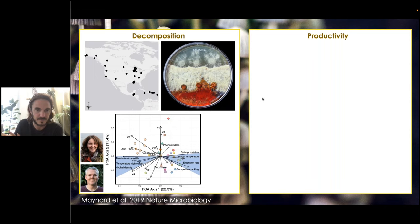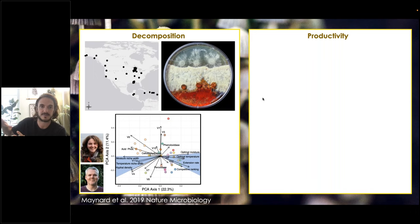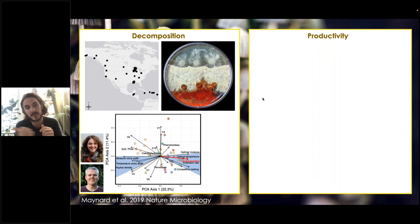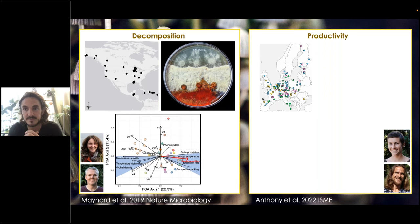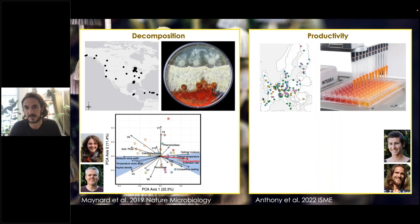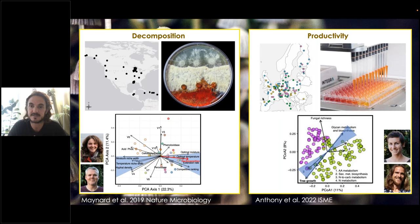By throwing all of those traits into a principal component analysis, we can start to see the trade-offs in trait expression that explain variation in decomposition across these fungi. We see a very clear trade-off between fast-growing fungi on the left and slow-growing fungi on the right. The slow-growing individuals are very good at tolerating cold and dry conditions, but that comes at the expense of rapid growth. The fast-growing individuals thrive in optimal warm moist conditions but cannot survive in harsh conditions, and their increased metabolic activity means they correlate really well with decomposition rates. On the productivity side, we've been using a large network of entire microbial communities from across Europe, using functional gene assays to explore the functional genes expressed by these fungal communities.